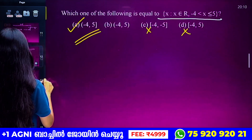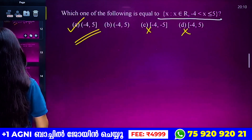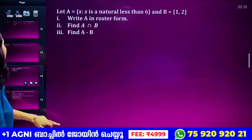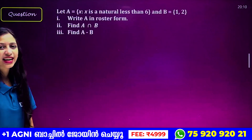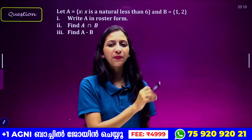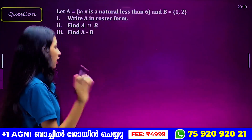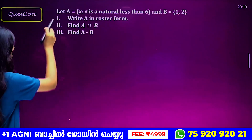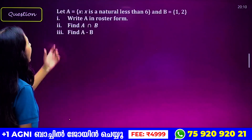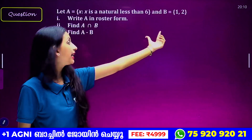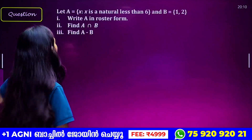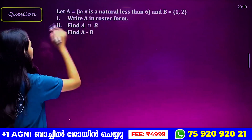Then we have the intervals section. We have questions shown here. The intervals section is skipped. Then we have more questions. Let A equal the set of natural numbers less than 6, and B equal to set {1, 2}. That means we have a roster formula. Already we have said we have a roster formula.